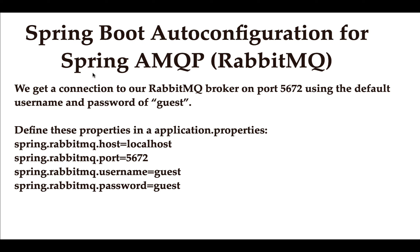To connect our Spring Boot application with the RabbitMQ broker, we use these properties: spring.rabbitmq.host=localhost and spring.rabbitmq.port=5672. These are the default values. Spring Boot auto-configuration uses these properties behind the scenes to automatically connect our Spring Boot application with the RabbitMQ server, meaning we don't have to define them in application.properties because Spring Boot will automatically use these default values.